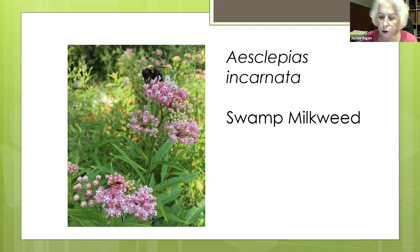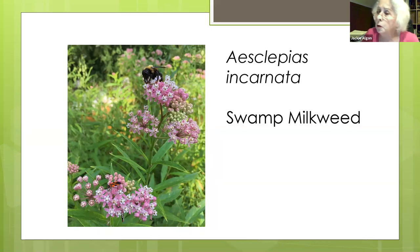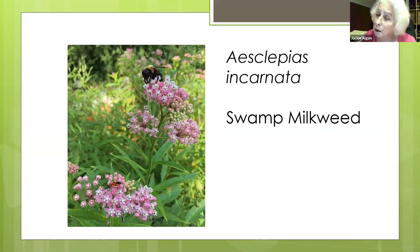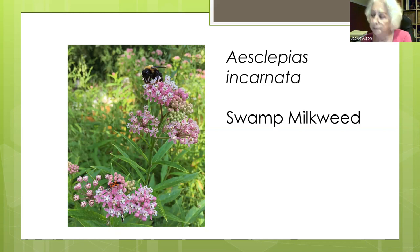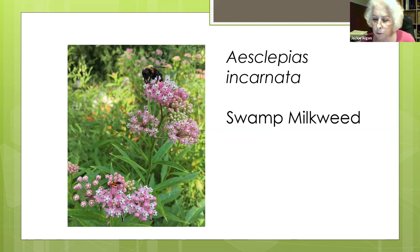How do you remove Japanese stiltgrass? Japanese stiltgrass is an annual plant. The best thing to do is mow it. If it starts to come back, keep mowing it — just mow it before it goes to seed. Now is a great time to do that. And we've covered how to get rid of Japanese knotweed already.